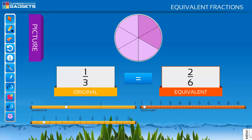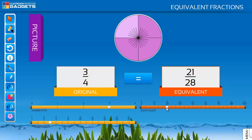Select a new original fraction, say three quarters, and choose a new equivalent fraction from those on the slide.